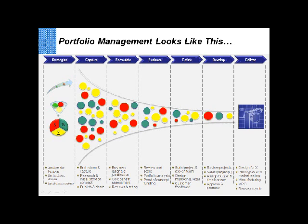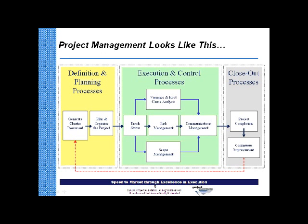From a project execution standpoint, if we talk about delivering on time and on budget and establishing business controls in a project-based environment, we're talking about these sub-processes: how we define an initial charter or scope, how we plan and organize a project, and as we move into execution and control — how we track status, manage risk, manage scope, identify variances and their causes, and communicate status.